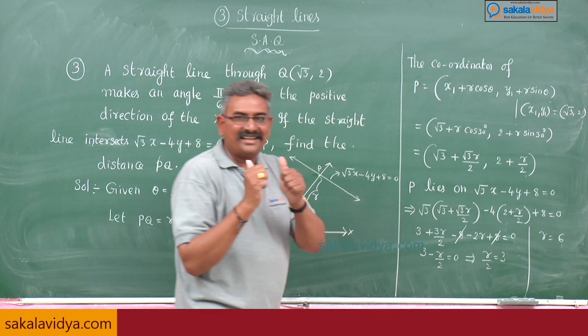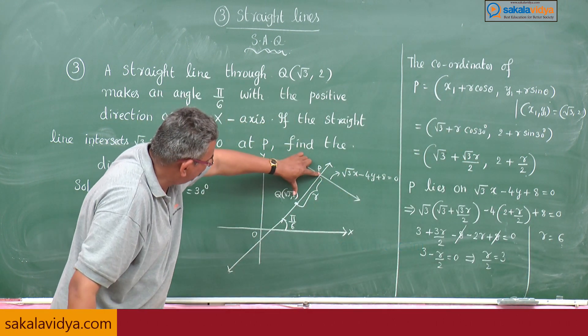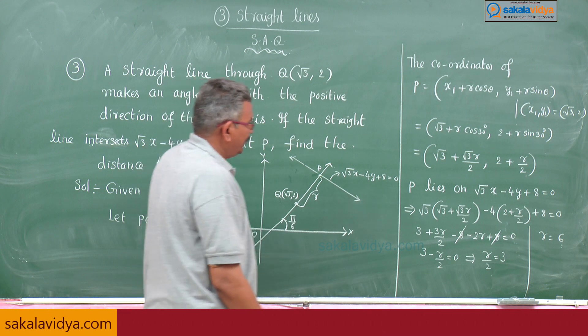But actually, what is r? Nothing but the distance between P and Q. So the distance PQ = 6.